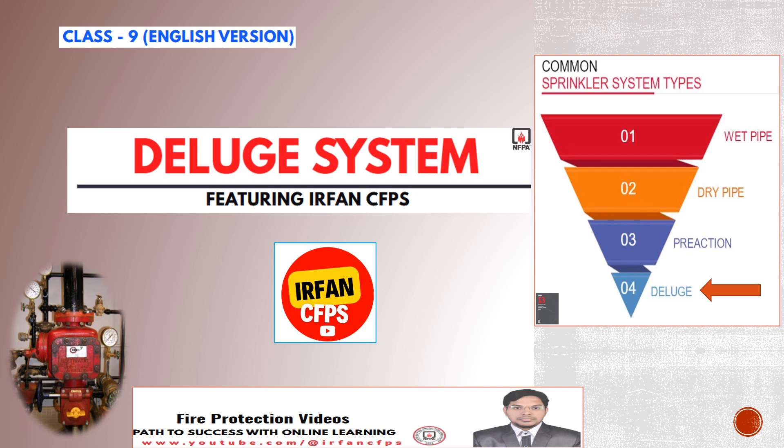In today's class, we shall discuss the fourth type of sprinkler system, that is deluge system. Please note that these deluge systems may be required to protect extra hazard occupancies by creating a fire buffer zone or by cooling the surfaces to prevent deformation or structural collapse.